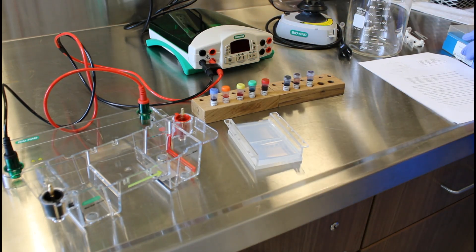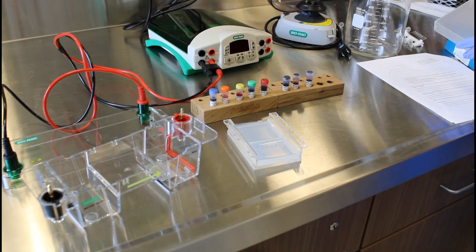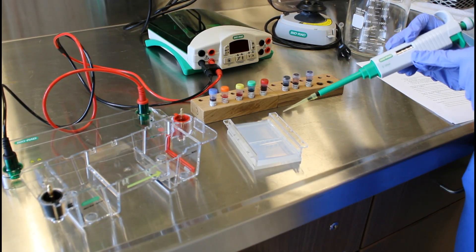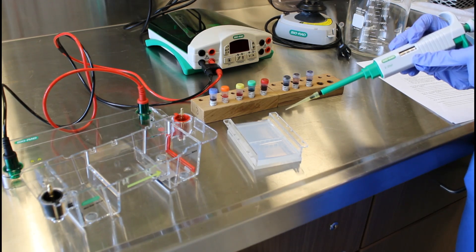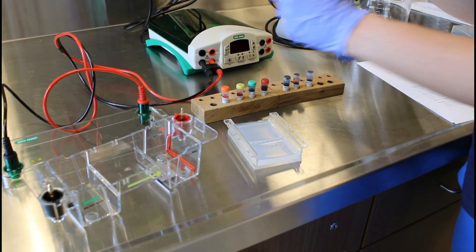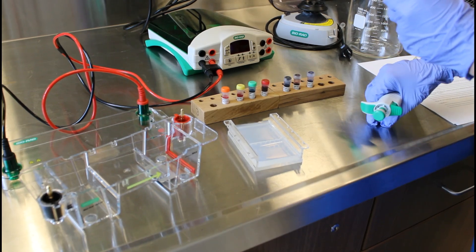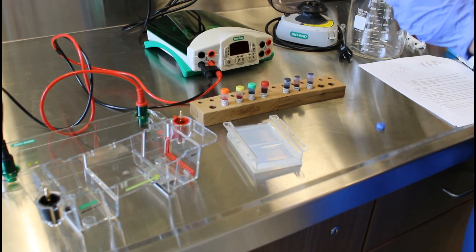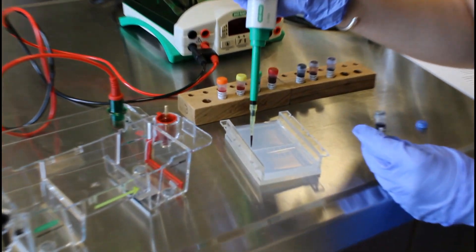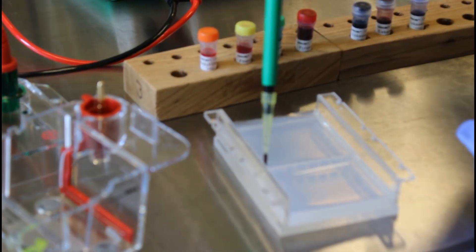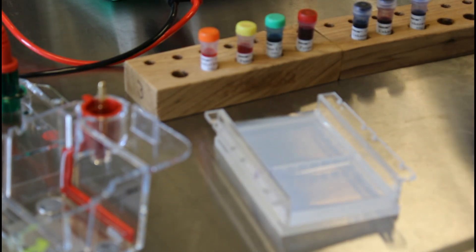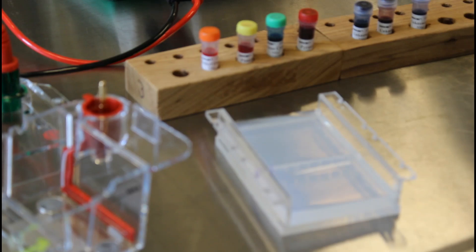I'm going to use a micropipetter. It's already set to 20 microliters and I'm going to use this to pipette 20 microliters of each of these substances into the gel. So starting with this bromphenol blue, I'm going to get that in there and then I'm going to throw away this tip so that I don't contaminate my next well with that dye.